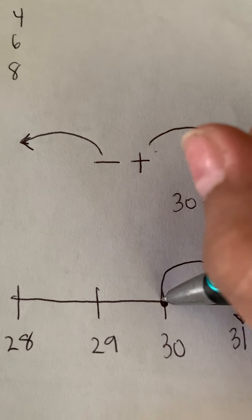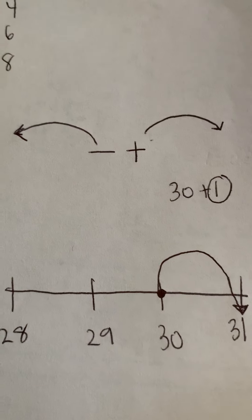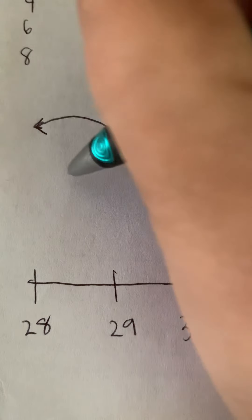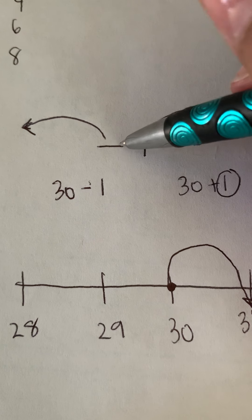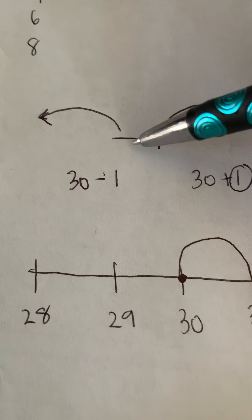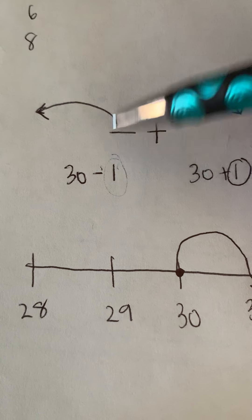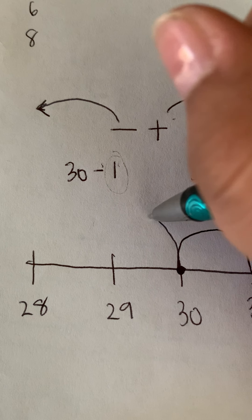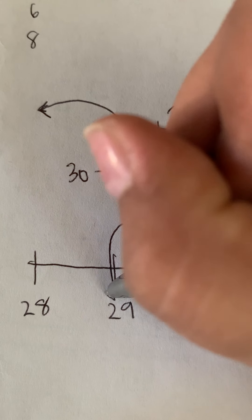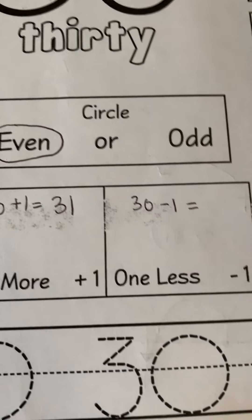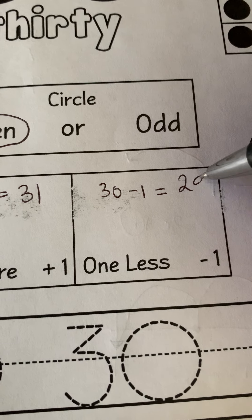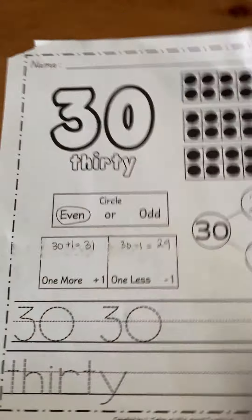Now we're going to go to 30 take away 1. Remember, we start again at our number of the week. And we're going to do 30 take away 1. So it's telling me take away. That means jump backwards on my number line. And I have to jump back one time. So I'm going to take my 30 and I'm going to jump back 1. That means my answer 30 take away 1 is 29. So I am going to write 29 here.